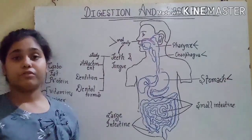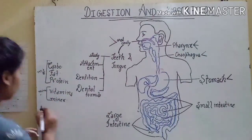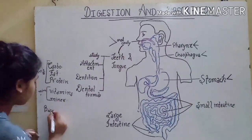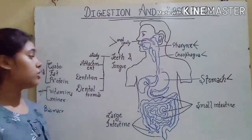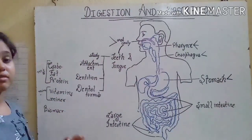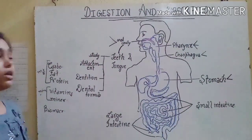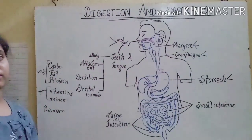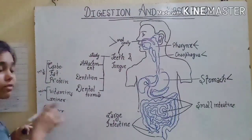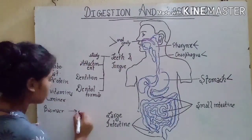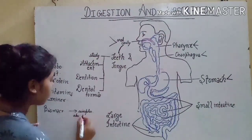We can't directly utilize the complex food substances, which are called bio-macromolecules. Bio-macromolecules cannot be directly utilized by ourselves, so these complex food substances have to be converted into simpler absorbable form that can be easily utilized. Digestion is the conversion of complex food substances into simpler absorbable form.